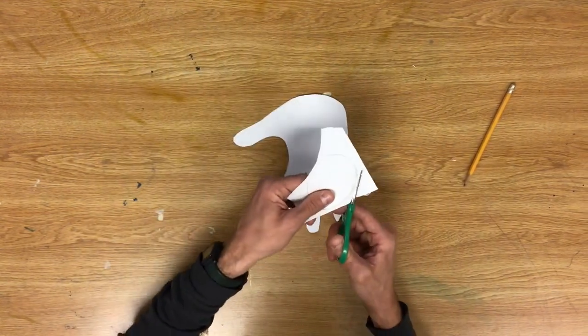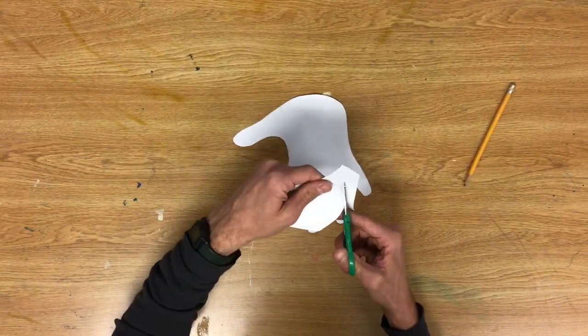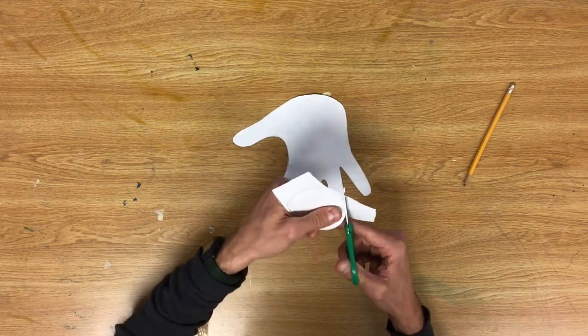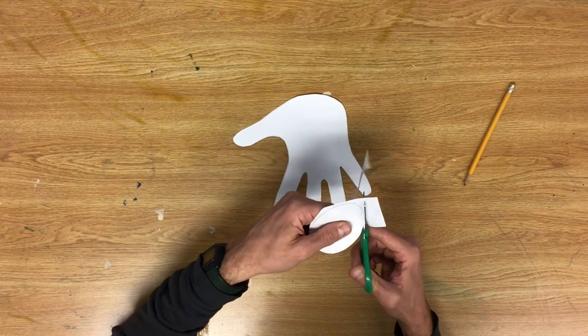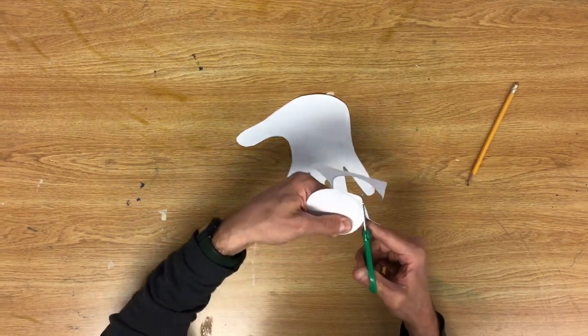I'm going to take my scissors, cut out this oval, and then we're going to glue it down to make our polar bear's head.